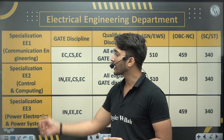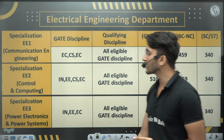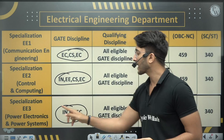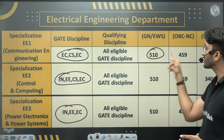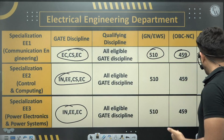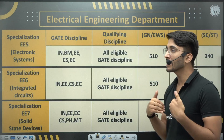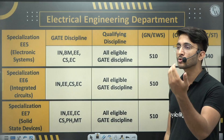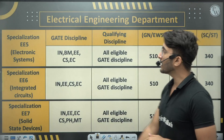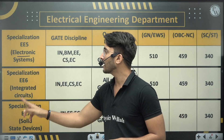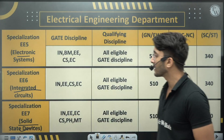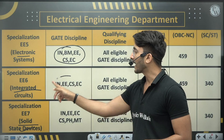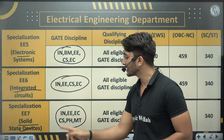In the Electrical Engineering department, you can join Communication Engineering, Control and Computing, or Power Electronics and Power Systems M.Tech programs. Other courses include Electronic Systems, Integrated Circuits, and Solid State Devices. Eligible GATE disciplines include BM, Electrical, CS, EC, IN, and PH/MT for various programs, with minimum GATE scores mentioned in the PDF.